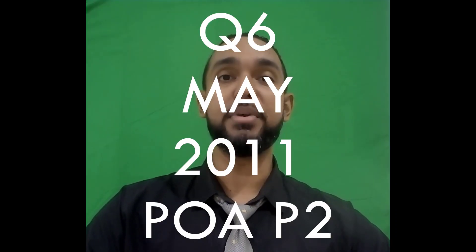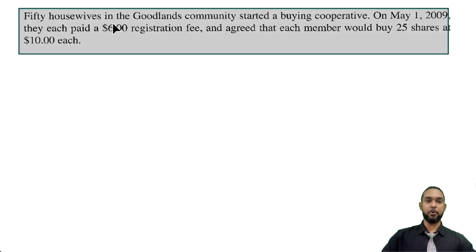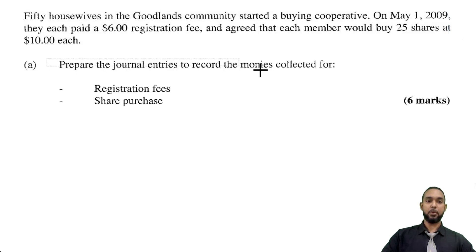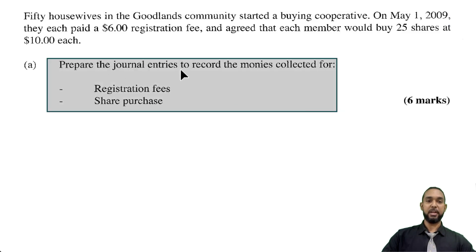Hey guys, Chris from Adaptuation here, and in this video I'm going to show you the solution for question 6 from the May 2011 POA paper 2. If you want to see the solutions for the other questions on this paper, I'll put a card up here and a link in the description below, so be sure to check those out as well. They start off by telling us that 50 housewives in the Goodlands community started a buying cooperative. On May 1, 2009, they each paid a $6 registration fee and agreed that each member would buy 25 shares at $10 each. The first thing they want us to do is to prepare the journal entries to record the monies collected for registration fees and share purchase.